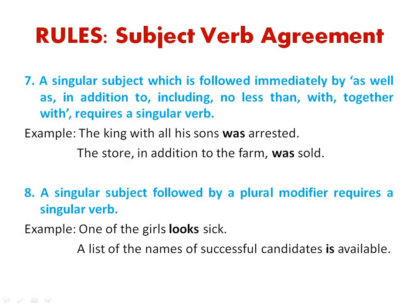Rule number 7: a singular subject followed immediately by phrases such as 'as well as,' 'in addition to,' 'including,' 'no less than,' or 'together with' still requires a singular form of the verb.